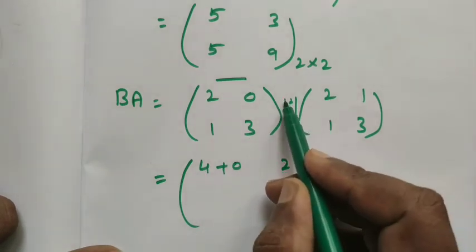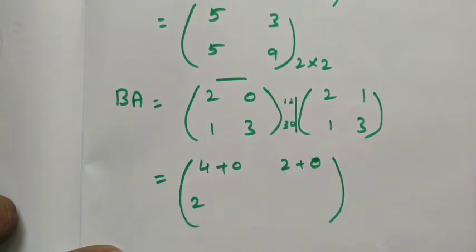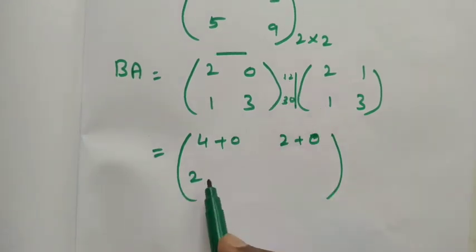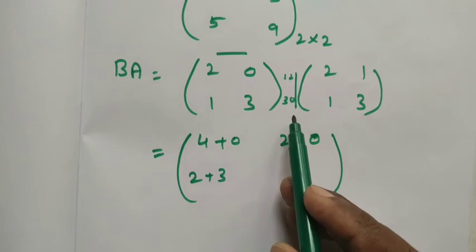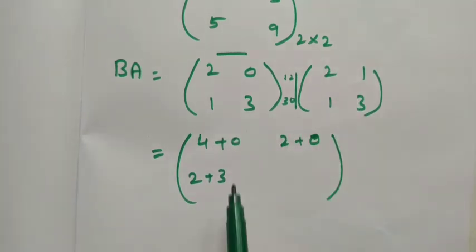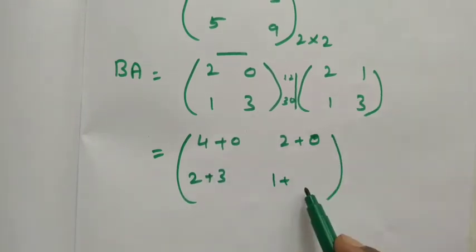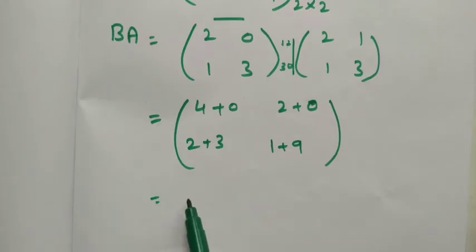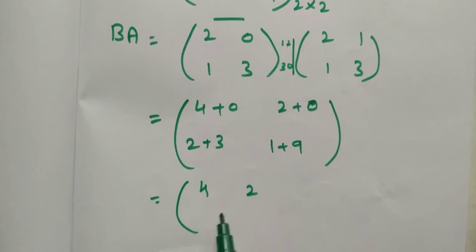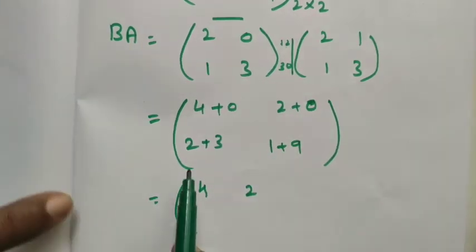Continuing BA: for the second row with the first column: 1×2 = 2 plus 3×1 = 3. For the second row with the second column: 1×1 = 1 plus 3×3 = 9. Adding the terms: 4+0 = 4, 2+1 = ... next step gives us 4, 2, 5, 10.